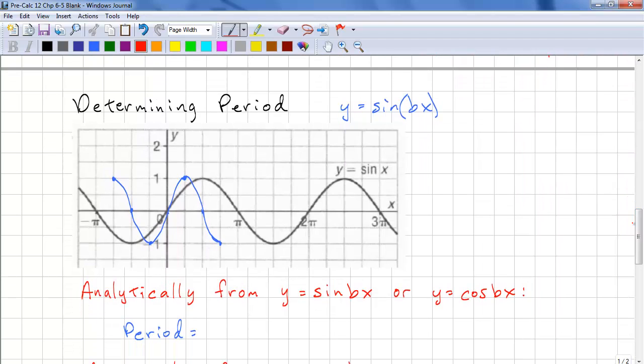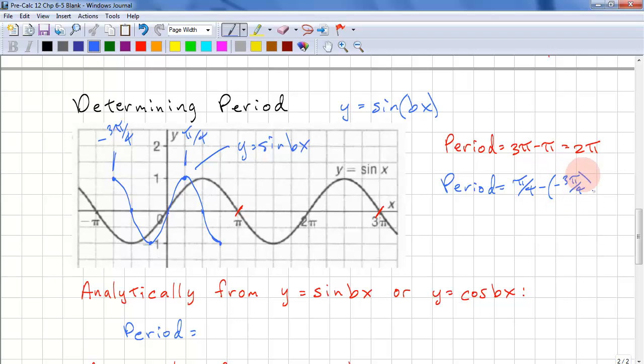Next we need to know how to determine the period. This is in the form of y equals sin bx. The period of the regular sine function we can find by looking for repeating intervals. So period equals 3 pi minus pi, and that's 2 pi. If we want to find the period of the second function, y equals sin bx, we take a look at this and this. Going from peak to peak is another way to do it. This is pi over 4 and this is negative 3 pi over 4. So the period is pi over 4 minus negative 3 pi over 4, and that's pi.